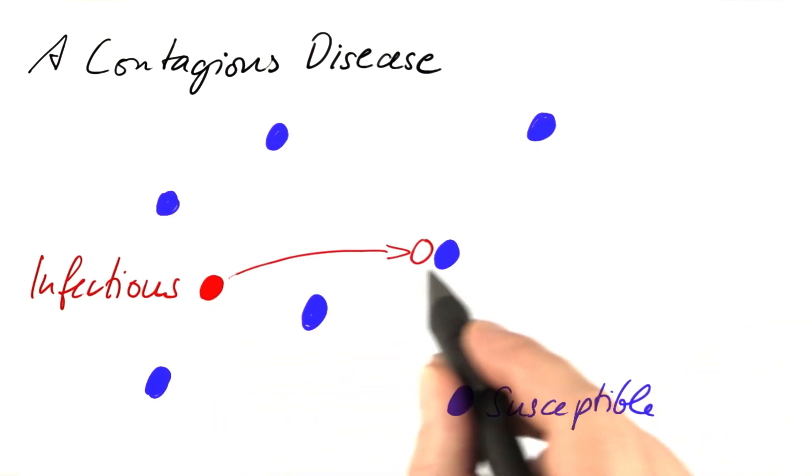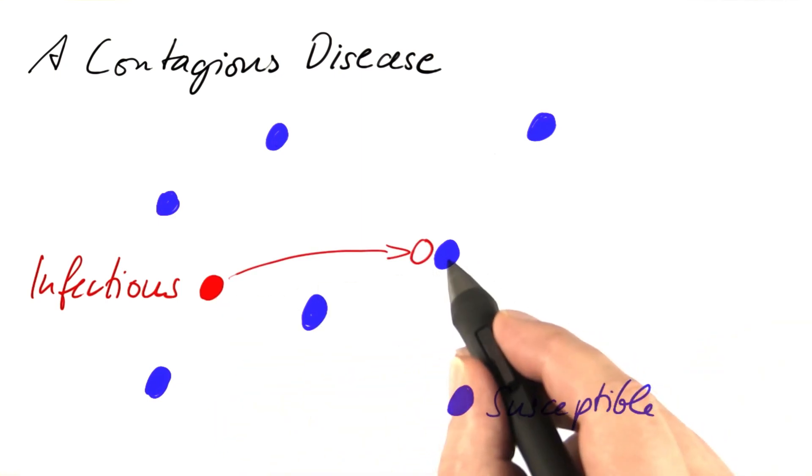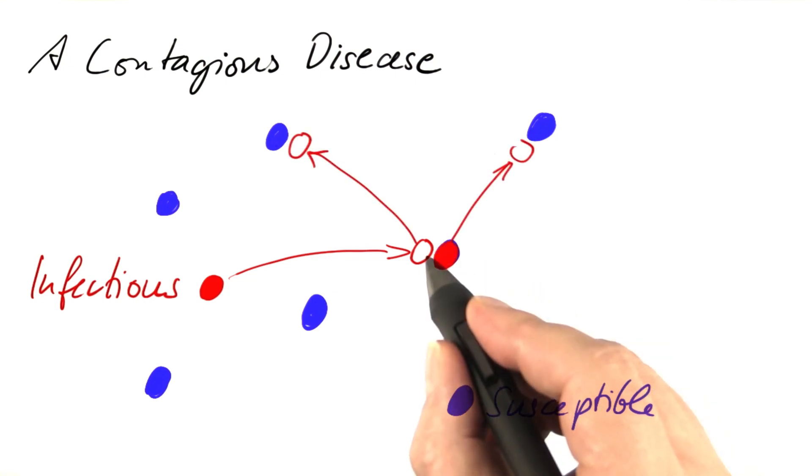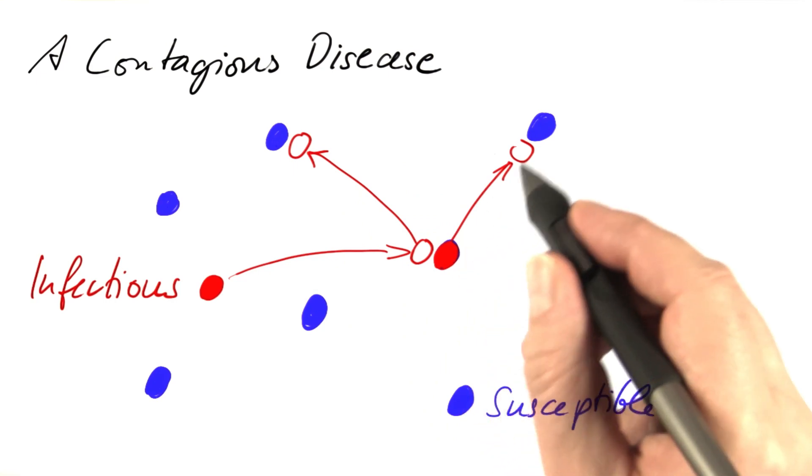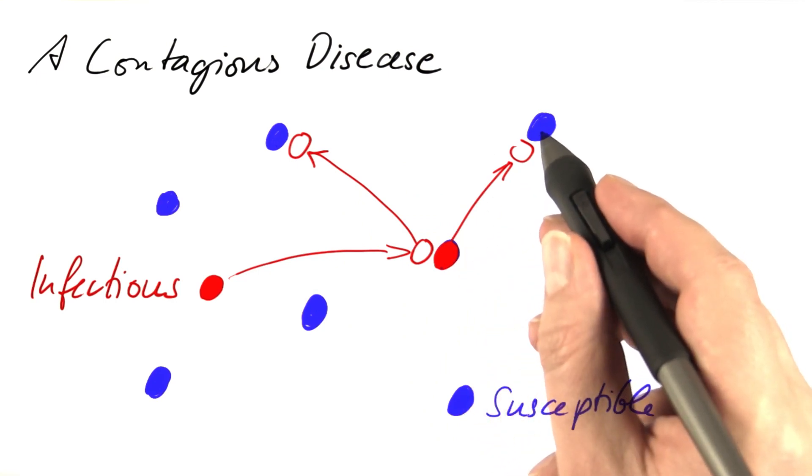If one infectious and one susceptible person meet, there is a certain chance that the susceptible person becomes infectious too, and then the first infectious person as well as the newly infected person further spread the disease.